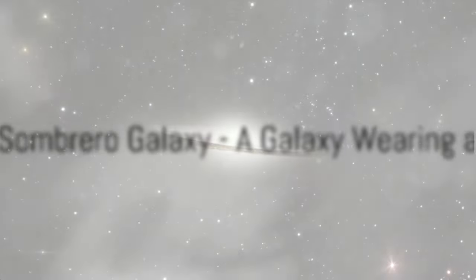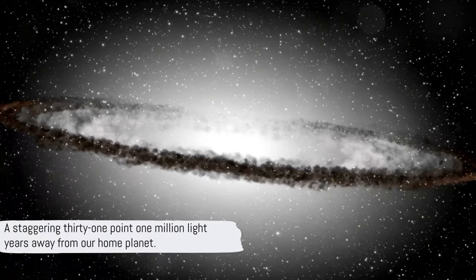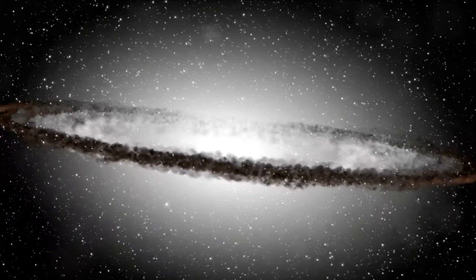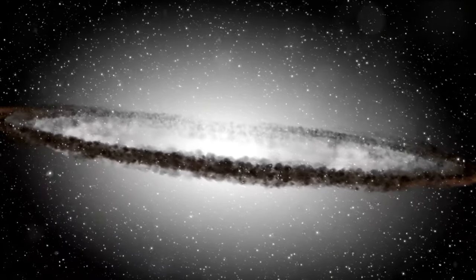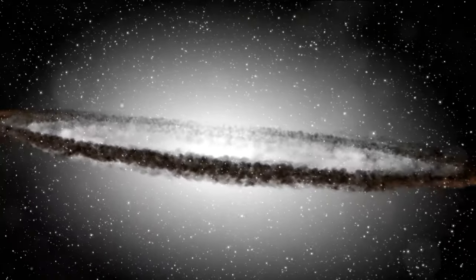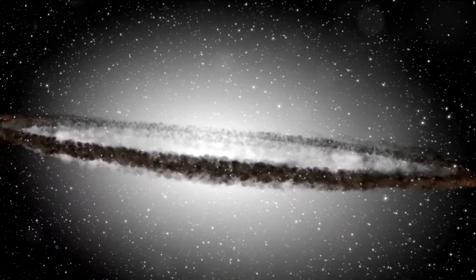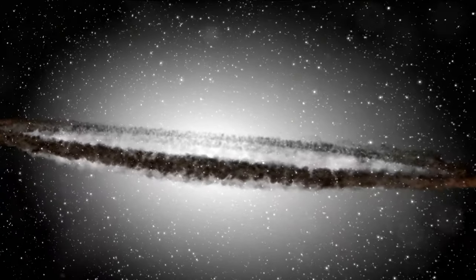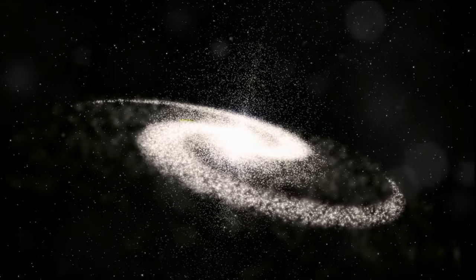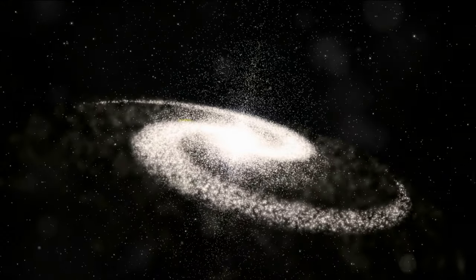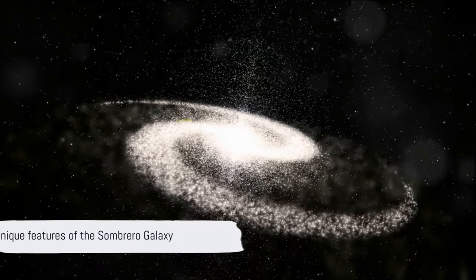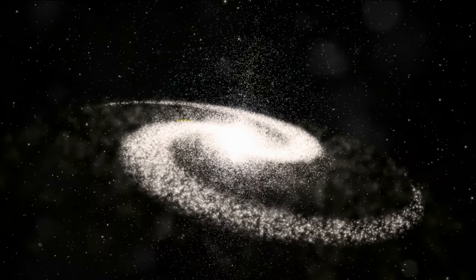Have you ever seen a galaxy wearing a hat? Meet the Sombrero Galaxy. This celestial body, aptly named for its striking resemblance to the brimmed hat of Mexican origin, resides in the constellation Virgo, a staggering 31.1 million light-years away from our home planet. Now you might be wondering, how does a galaxy come to resemble a hat? Well, the answer lies in the unique features of the Sombrero Galaxy.